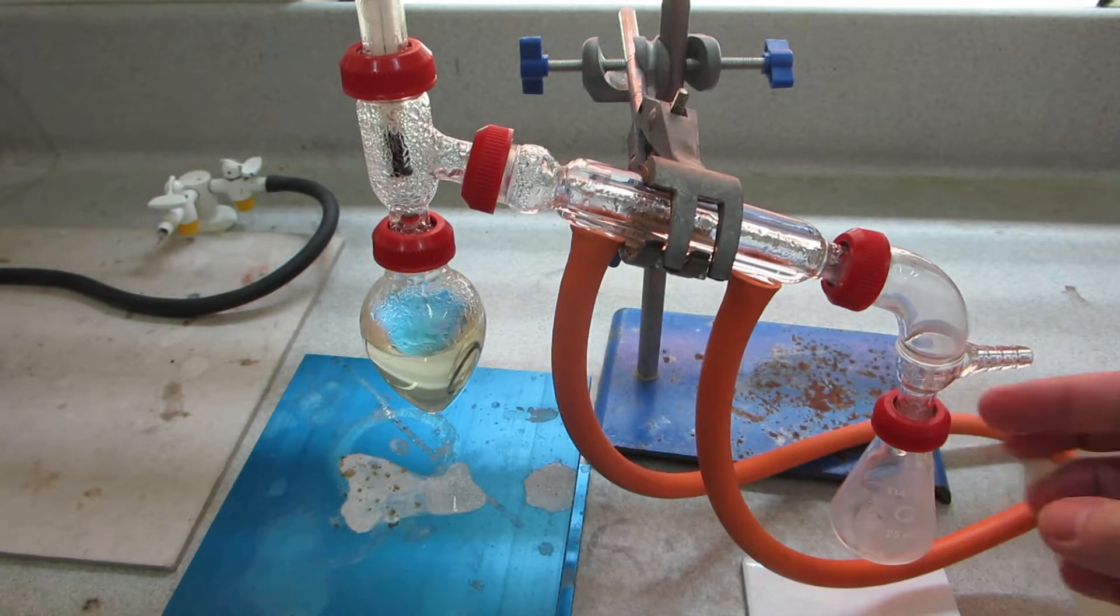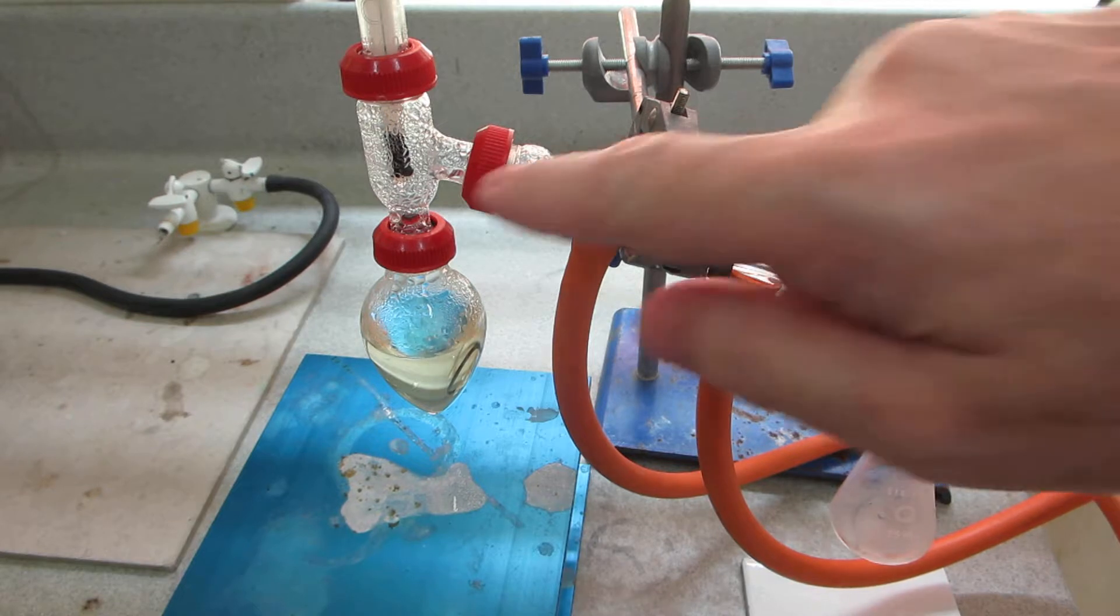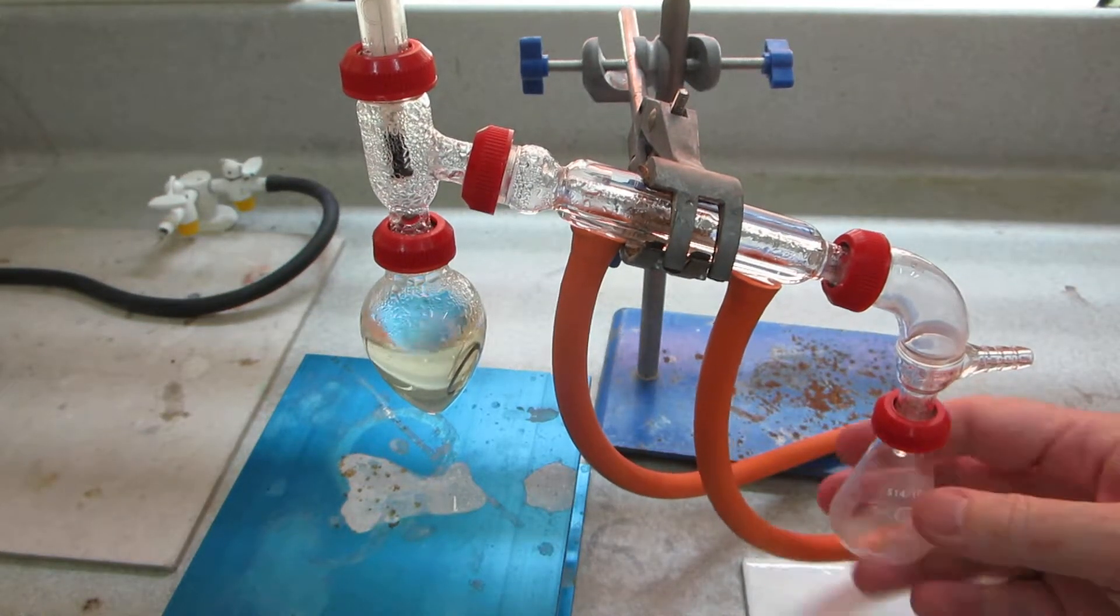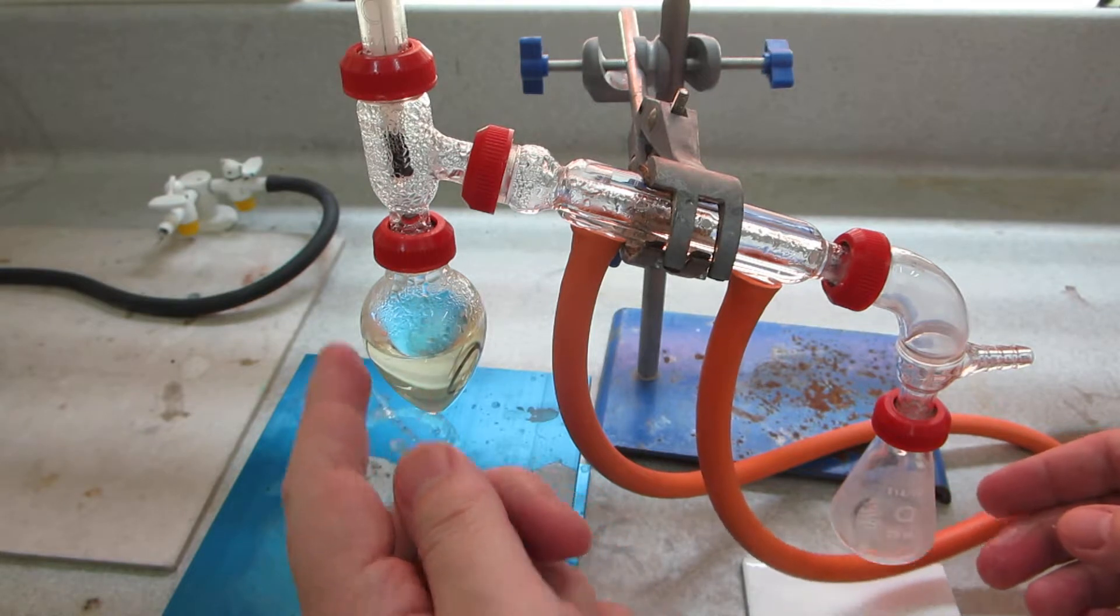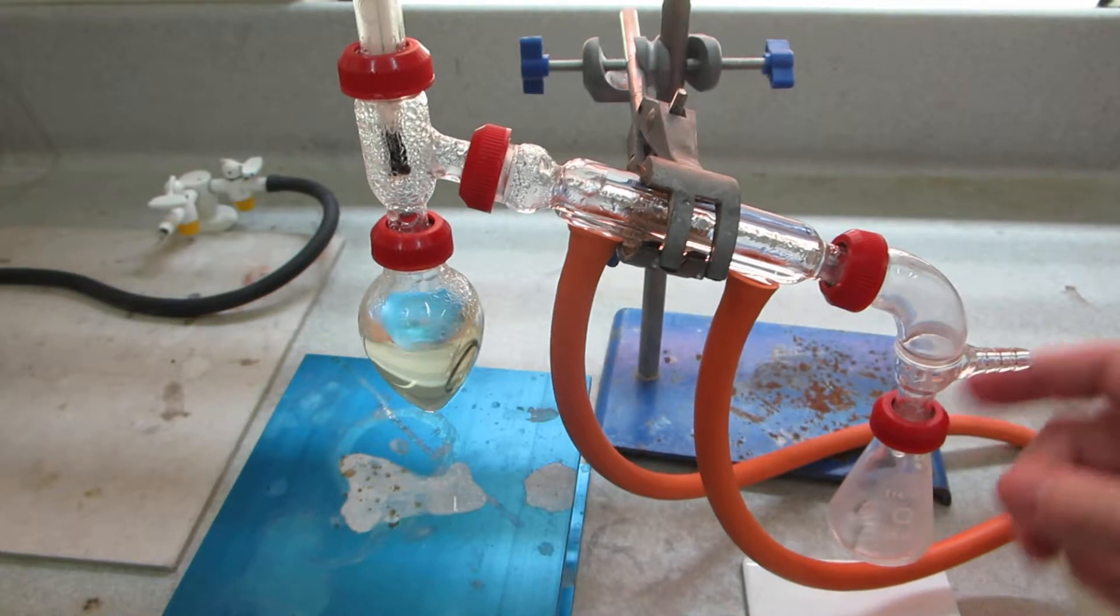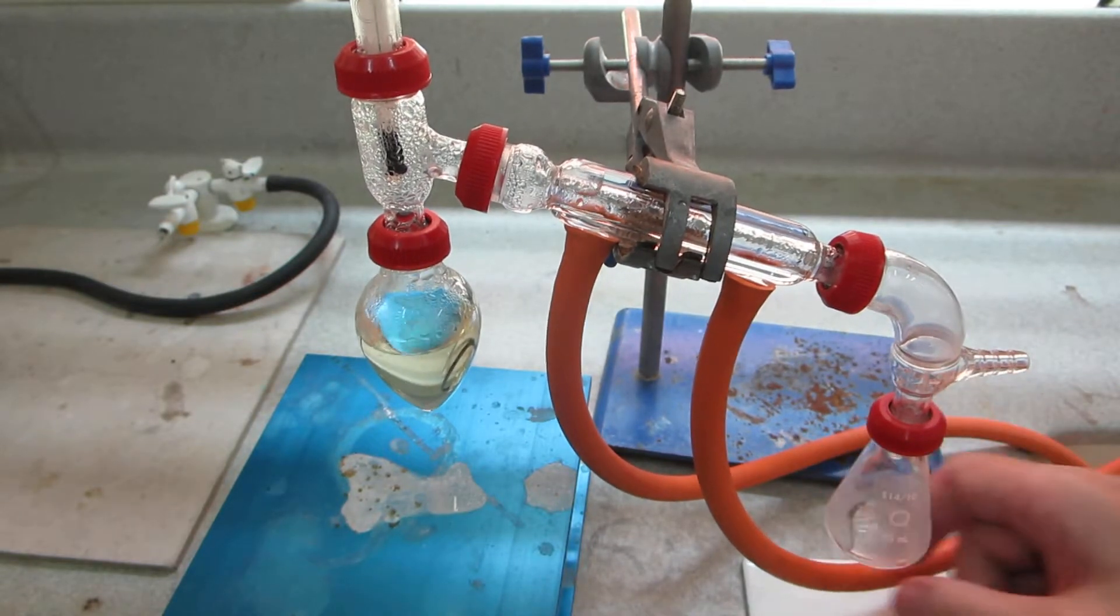Now there's a dilemma: do we heat this up further with a Bunsen burner and drive over more product, or do we take the material that's naturally condensed here with a few drops falling down there? So I think in this instance we'll take the product that's come over on the first take and we'll test that to see for the presence of an aldehyde.